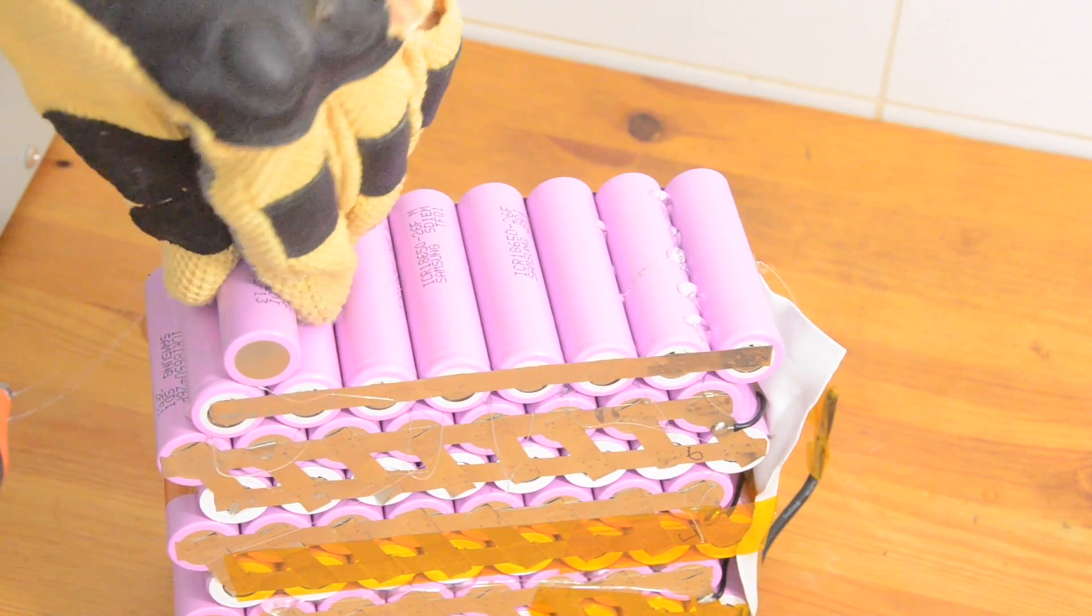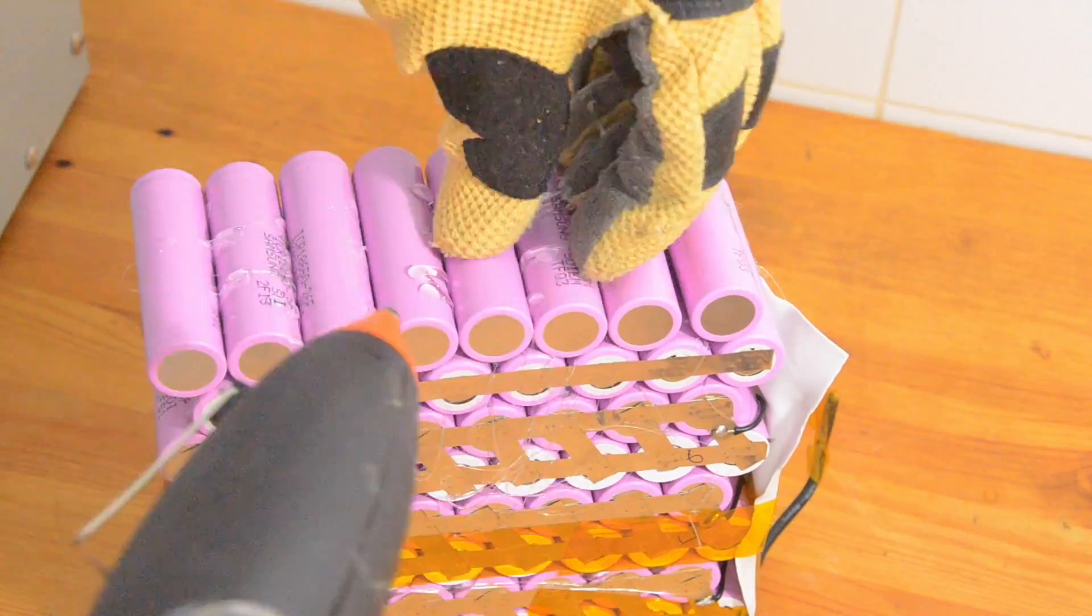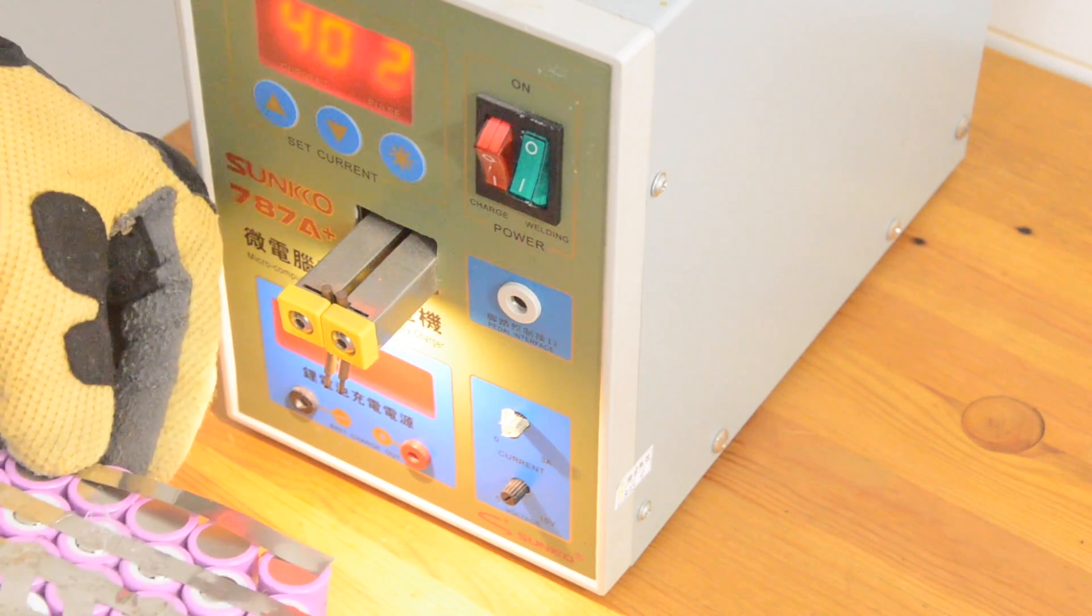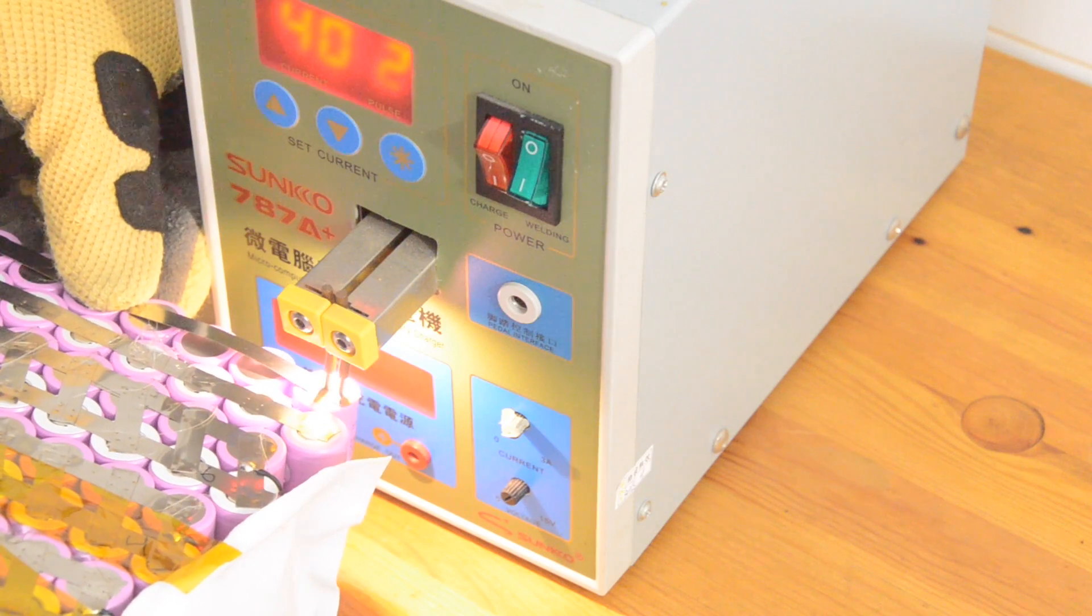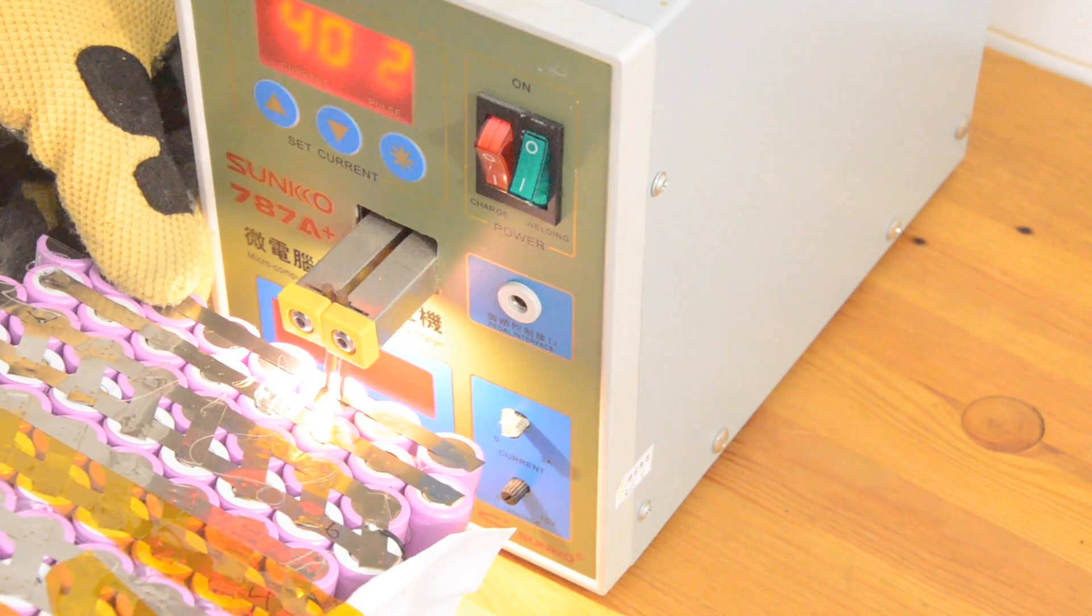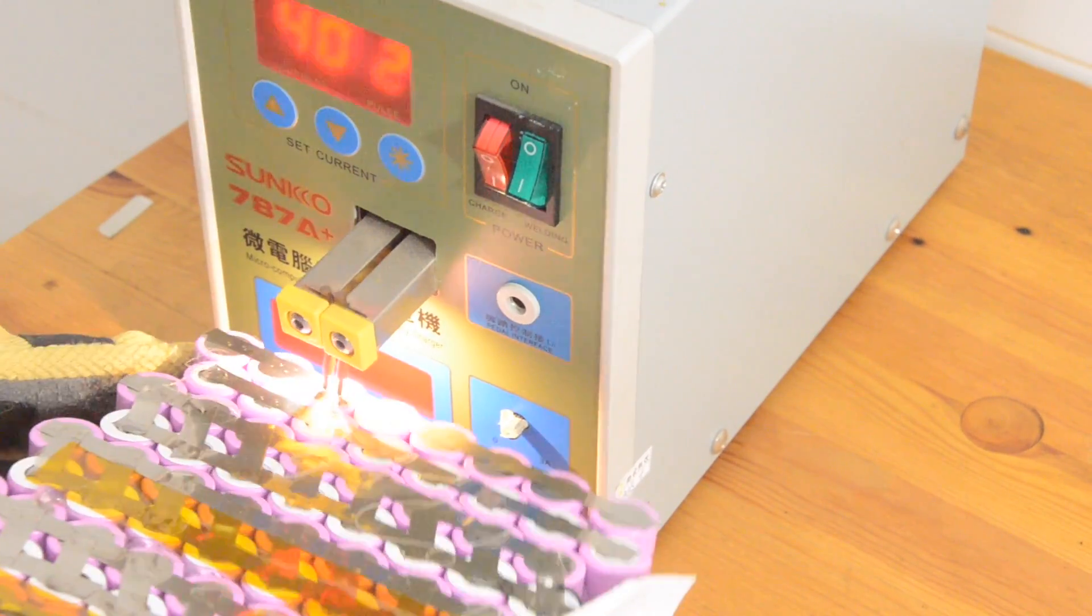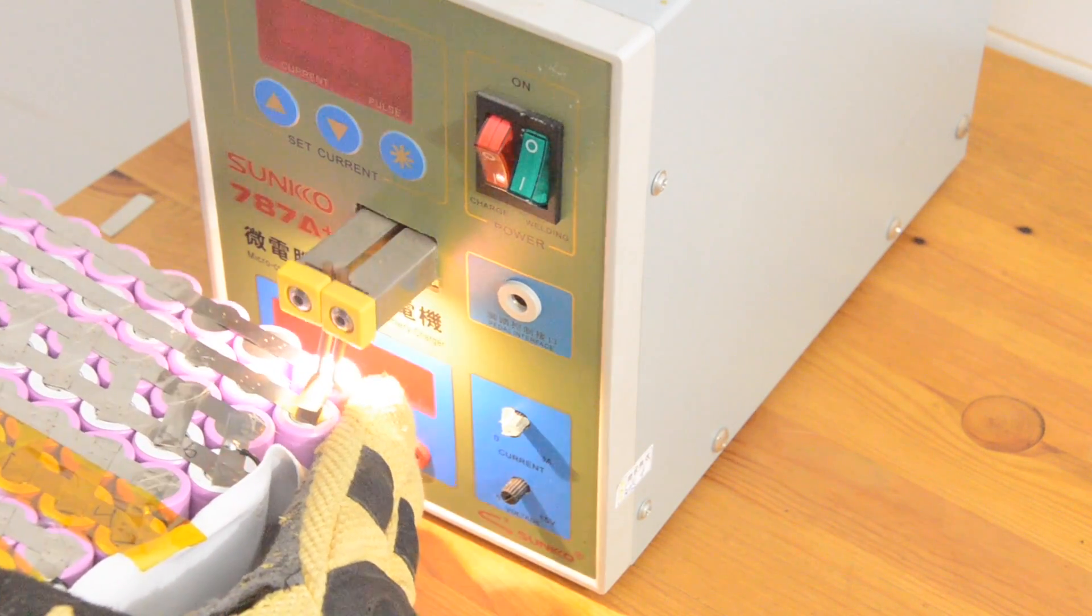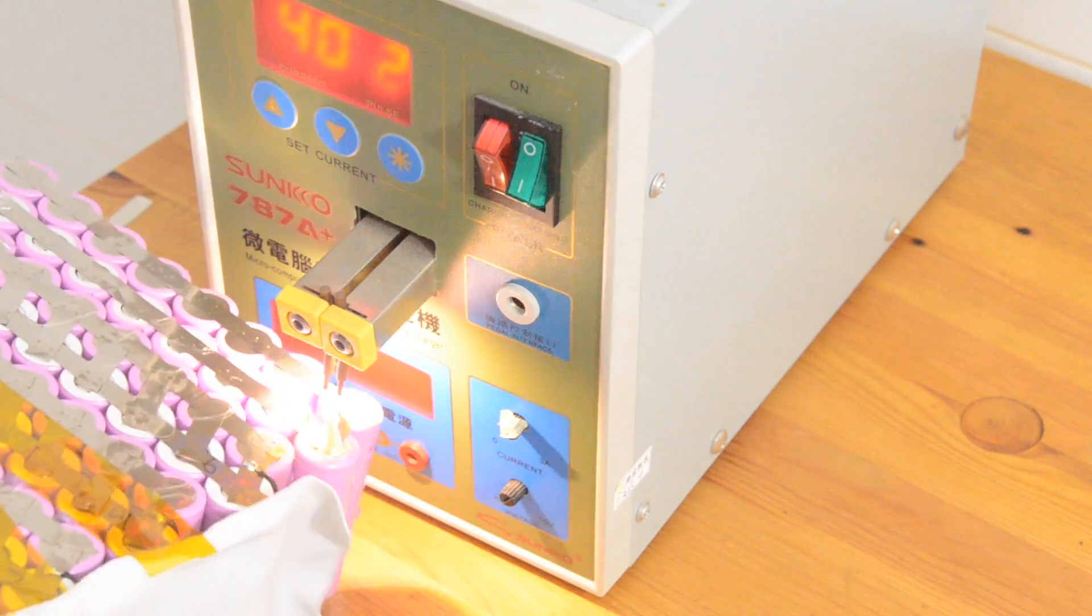Now I'm going to add the ninth cell group, again making sure I've got these cells facing the opposite way of the eighth cell group. And then I'm going to weld on a long piece of nickel, completing the parallel weld all the way along the length of this cell group. That way all of these cells are going to be welded in parallel. And then after the parallel weld, I'm going to do my next set of series welds. Now I'm going from the positive end of the eighth cell group to the negative end of the ninth cell group.